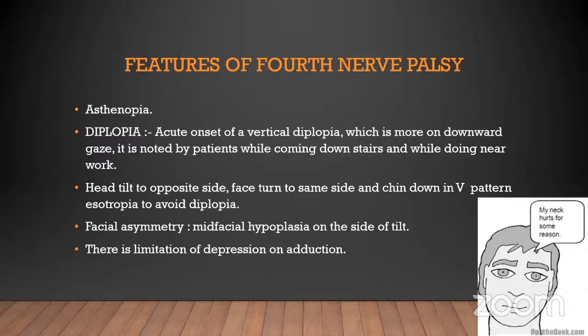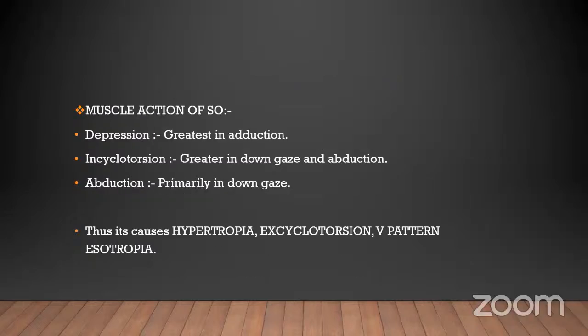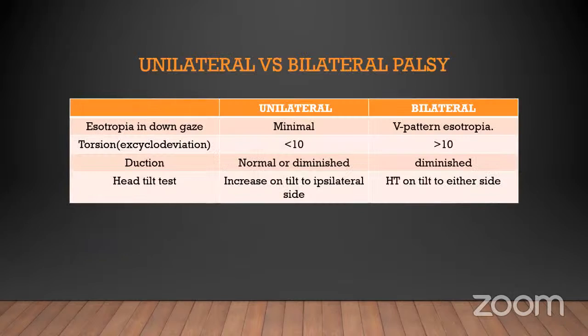There is facial asymmetry with midfacial hypoplasia on the side of the tilt, and limitation of depression on adduction. The normal muscle actions of the superior oblique are depression, incyclotorsion, and abduction. Thus the causes of SO palsy signs are hypertropia, excyclotorsion, and V-pattern esotropia. In unilateral palsy, esotropia in downgaze is minimal; in bilateral palsy, V-pattern esotropia is present. Unilateral excyclodeviation is less than 10 prism diopters; bilateral is more than 10 degrees.